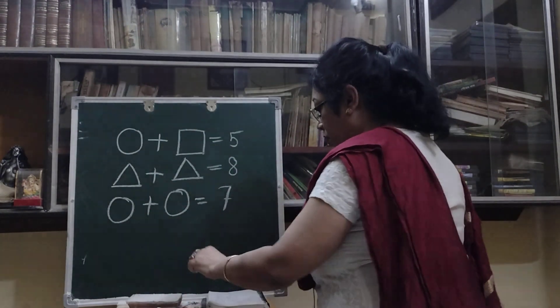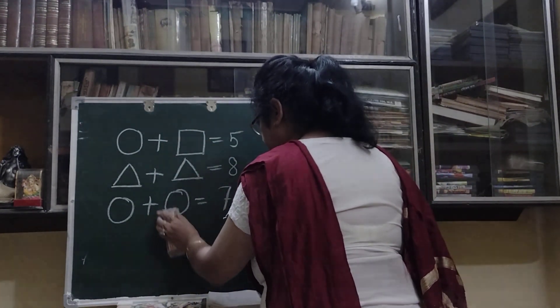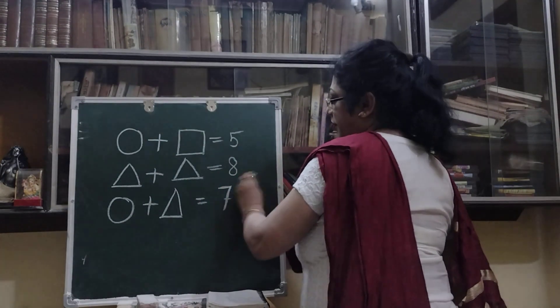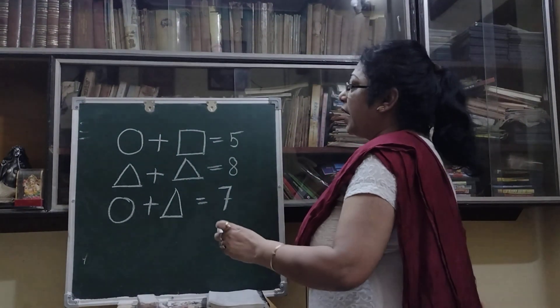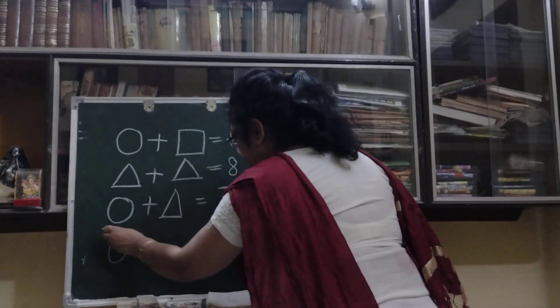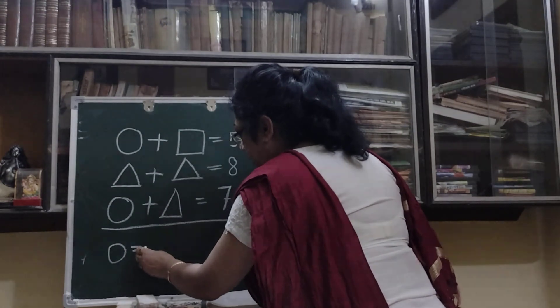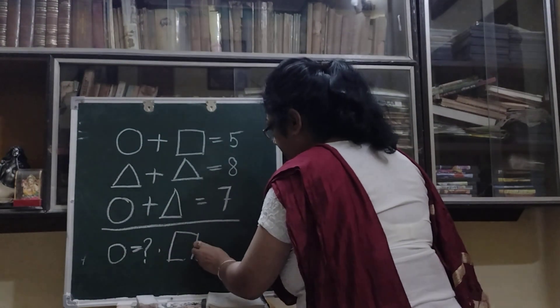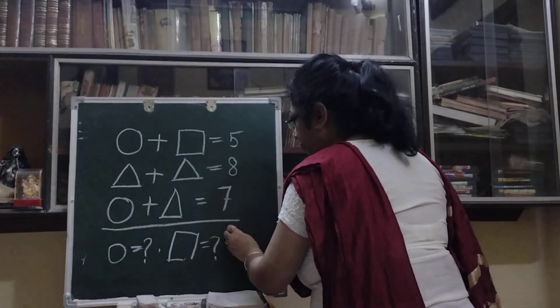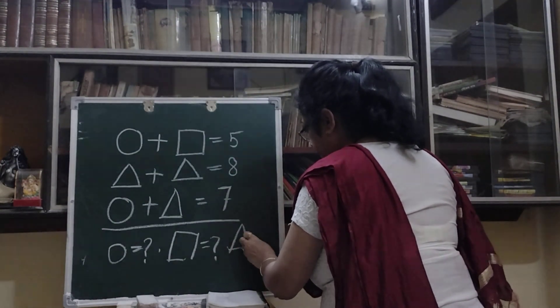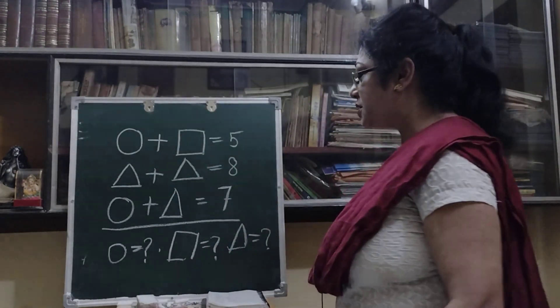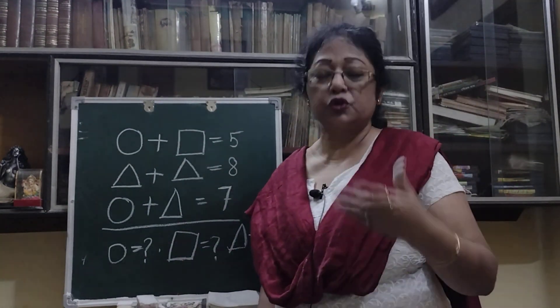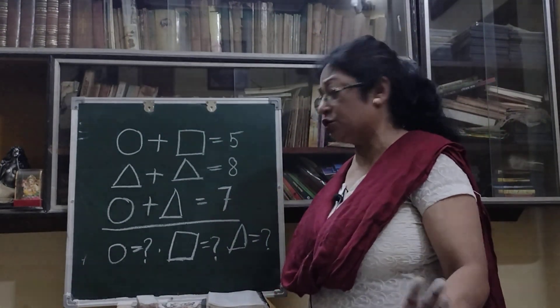Circle plus square is 5, this one is not circle. Circle plus triangle is 7. So what you will find? You will find the value of circle. This is our puzzle. You will find the value of circle, then you will find the value of the square and the value of triangle. Children, this way you will find the value of these three shapes: triangle, square and circle.